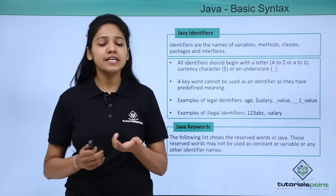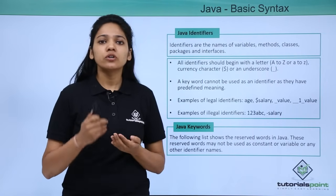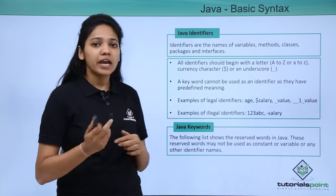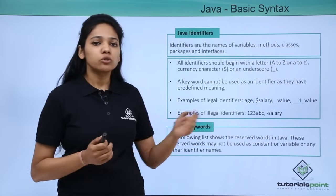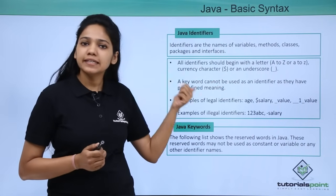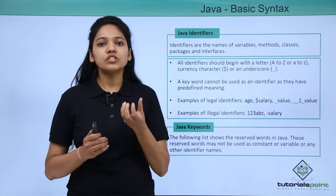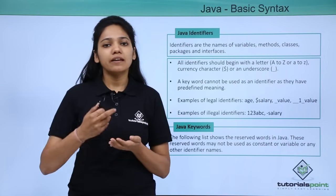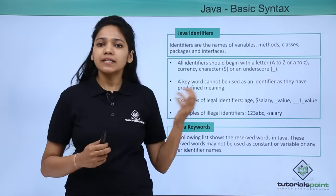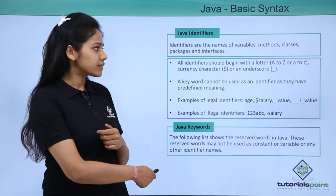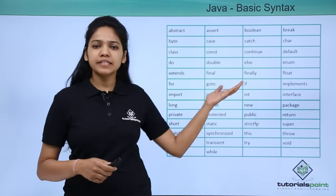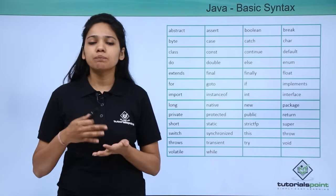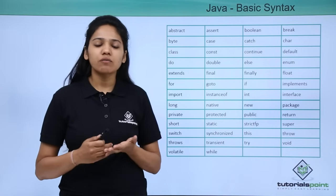There are certain words you cannot use as an identifier, and these are called keywords. Keywords are nothing but words that have a certain predefined meaning in the programming language. Here we can see a list of keywords which have a predefined meaning in Java, and you cannot change the meaning of these keywords.